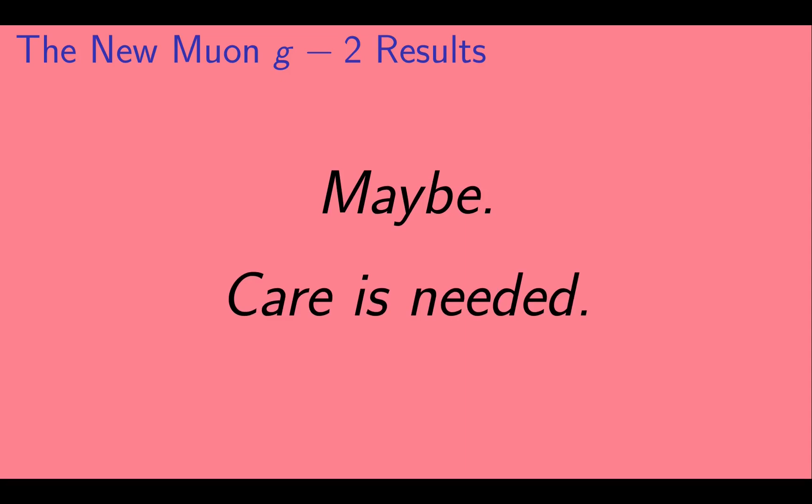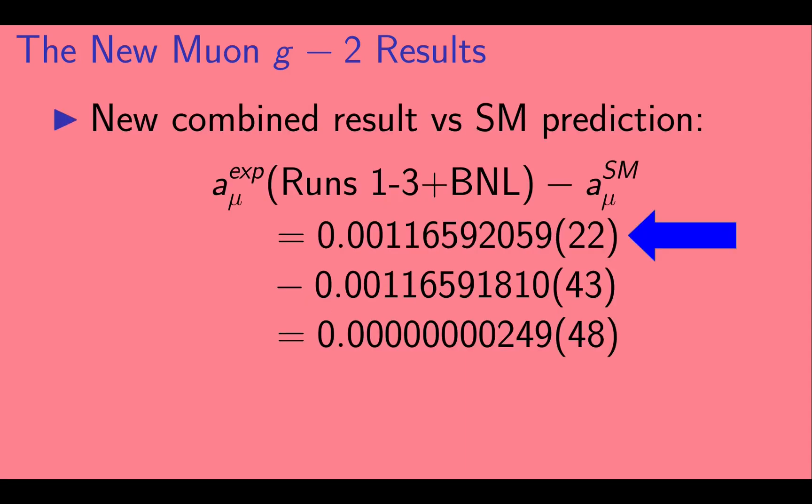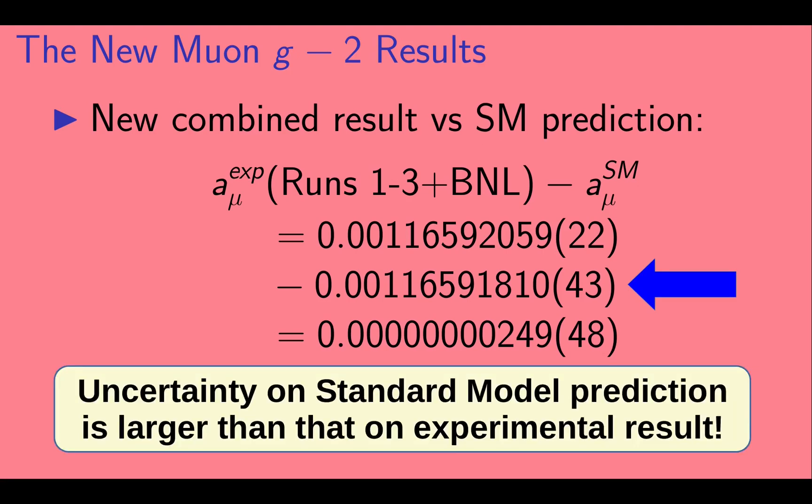Maybe. Care is needed. Let's look again at those error bars. As we saw, the error bar on the experimental result is impressively small. But the standard model prediction also has an error bar. And the uncertainty on the standard model prediction is larger than that on the experimental result.